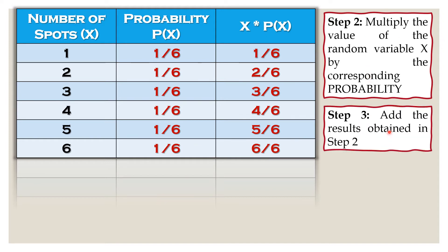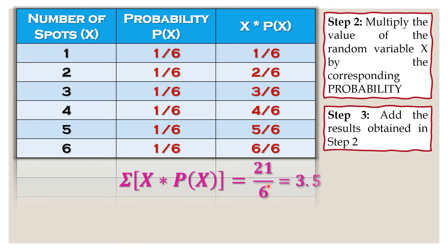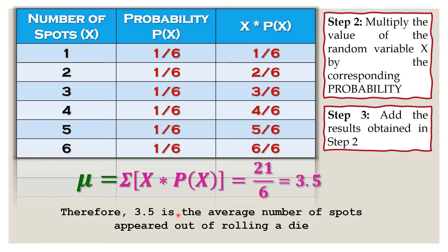For step number three, all we need to do is add the results. The values here are all fractions with the same denominators — these are similar fractions. In adding similar fractions, just add the numerators and copy the denominator. So, one plus two is three, three plus three is six, six plus four is ten, ten plus five is fifteen, and fifteen plus six is twenty-one. Copy the denominator six. The summation of x times P(x) is twenty-one over six, or 3.5. So the mean, denoted by the Greek letter mu, is 3.5. Therefore, 3.5 is the average number of spots that appeared out of rolling a die.